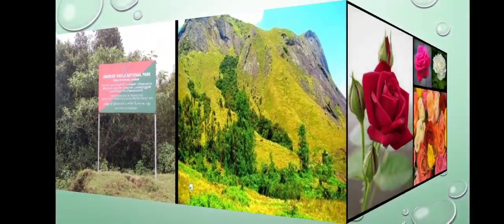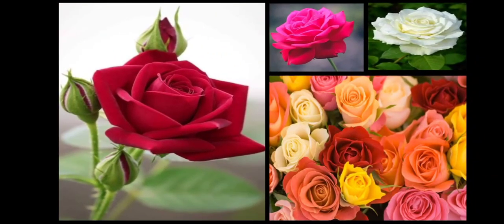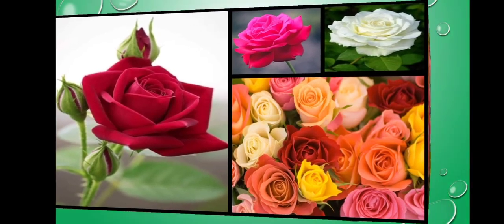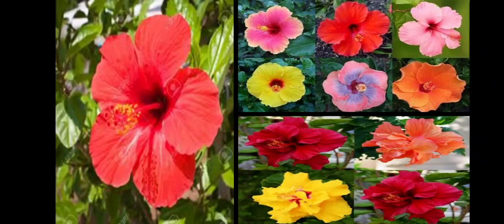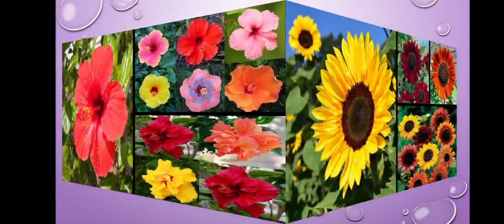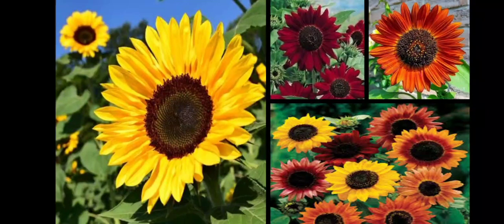Now let's observe some flowers. Look here — this is the picture of rose. It comes in various colors and is very beautiful. Next, this is Hibiscus or China Rose, which also comes in various shapes and colors. Next one is Sunflower, which also comes in various colors like orange, dark red, brown, and yellow.